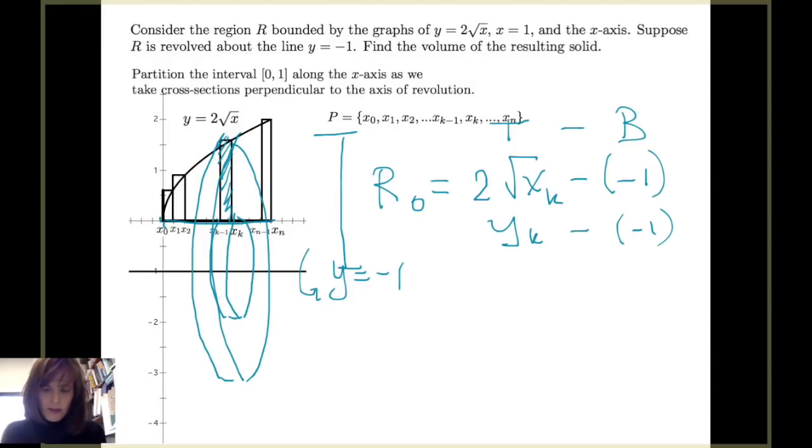Our inner radius comes from the x-axis. So r sub i will be y equals 0 minus our axis of revolution, y equals negative 1, to get a positive 1.